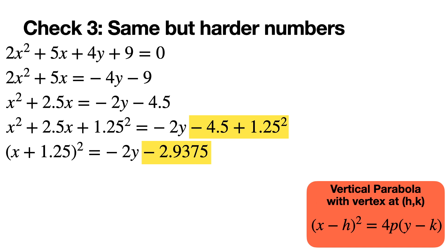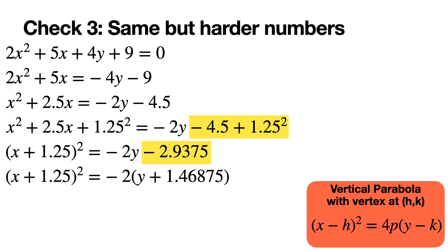On the right-hand side, simplify negative 4.5 plus 1.25 squared on a calculator to get the result. The left side now matches the focus-directrix form of x minus h squared. To handle the right side, factor out negative 2, giving negative 2 times the quantity y plus 1.46875. That number comes from dividing negative 2.9375 by negative 2. We're now done — it's in focus-directrix form. Here 4p equals negative 2, the vertex is at negative 1.25 and negative 1.46875.